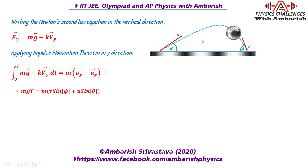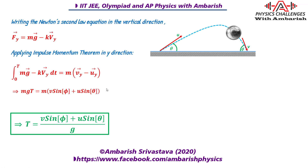Taking downward as positive, the final y-velocity is v·sin(phi) and the initial y-velocity is minus u·sin(theta). So the change in y-momentum gives v·sin(phi) minus (minus u·sin(theta)), which becomes v·sin(phi) plus u·sin(theta). The mass m cancels on both sides, giving the time of flight T = (v·sin(phi) + u·sin(theta)) / g.